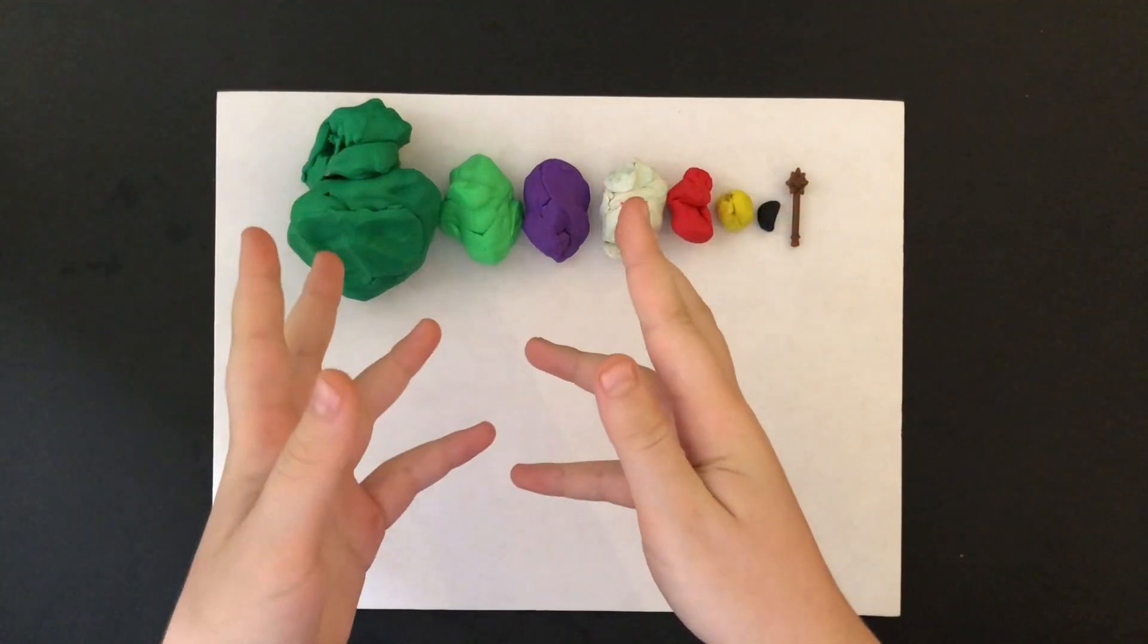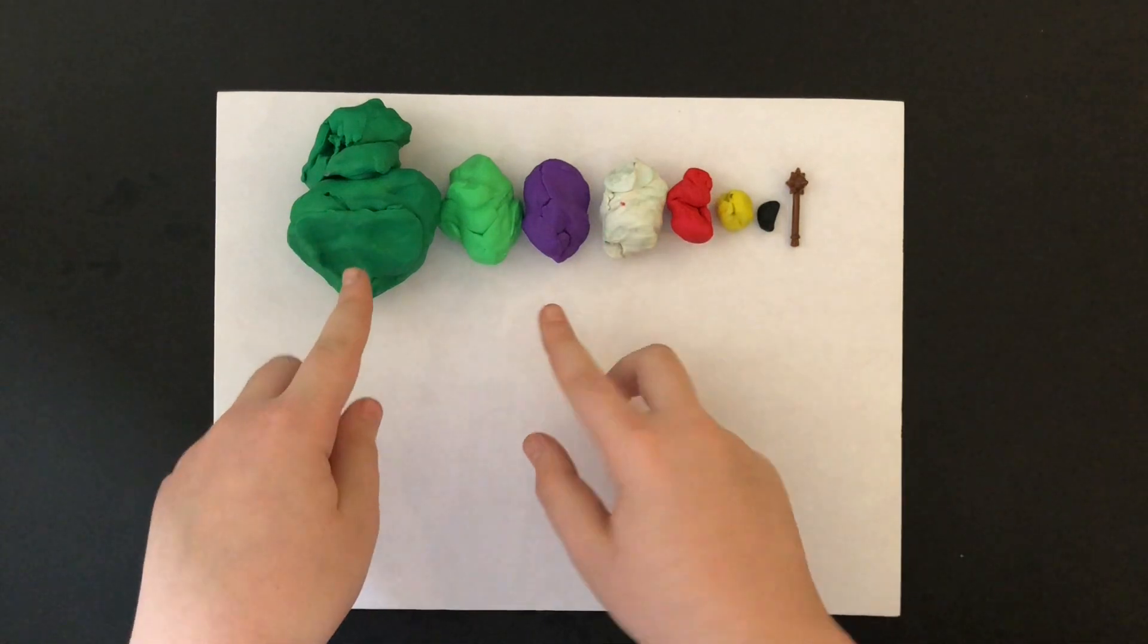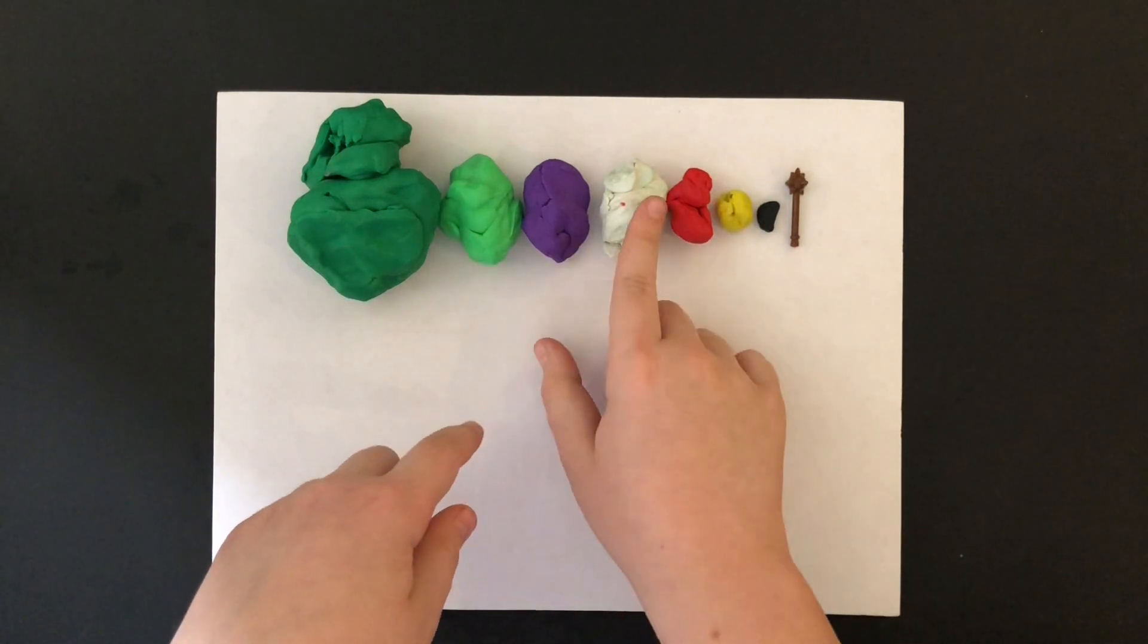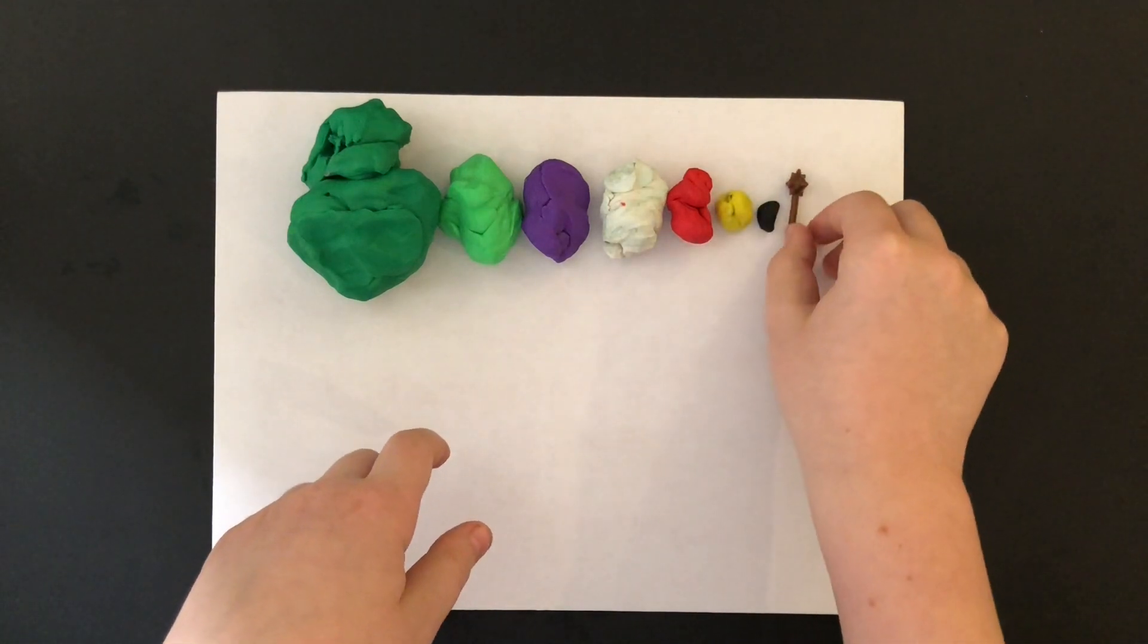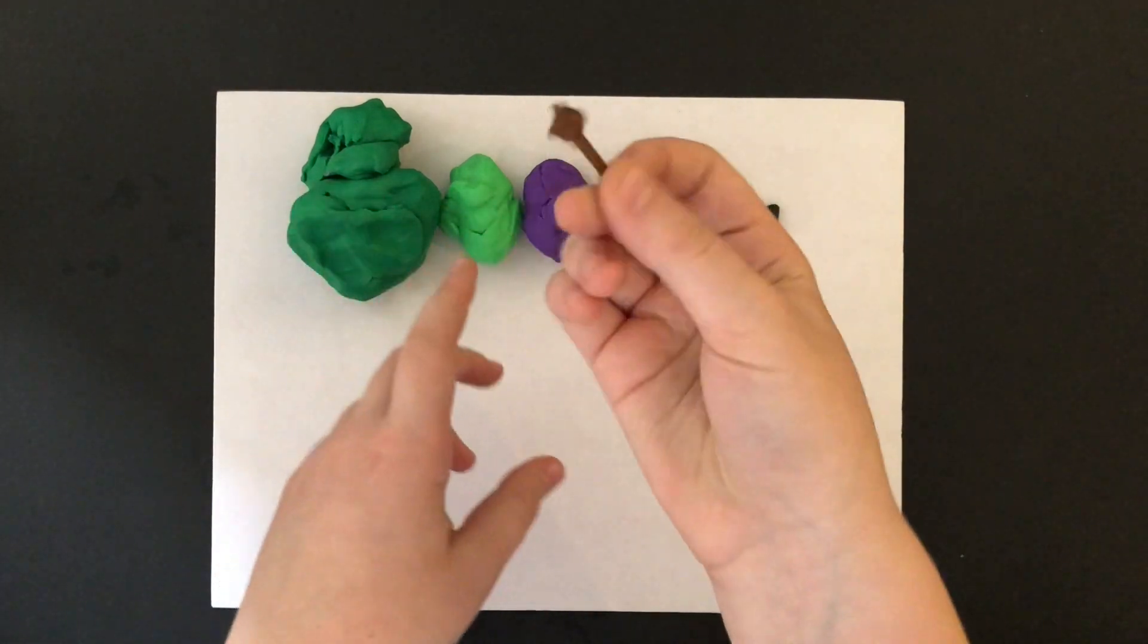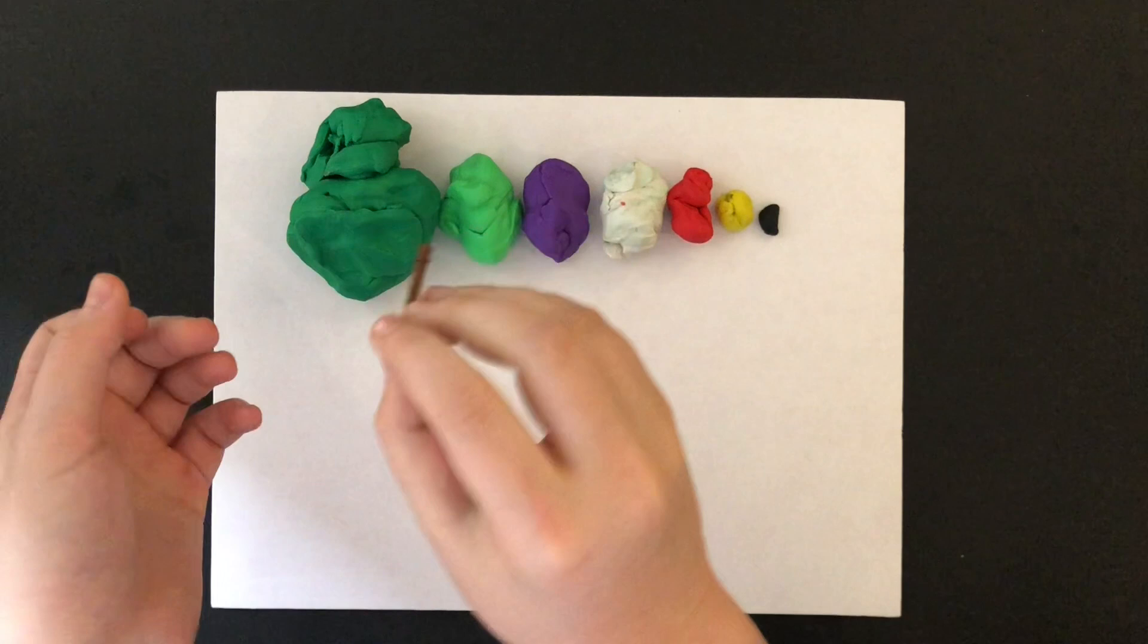For today's art piece, I'm going to need dark green, light green, purple, white, red, yellow, and black plasticine. I will also need this little toy tool to make holes for the eyes.